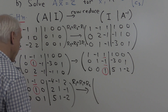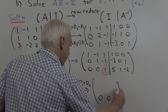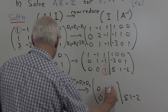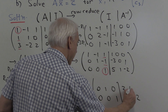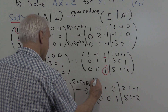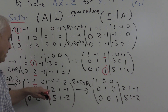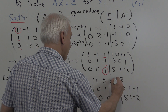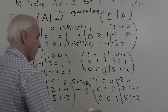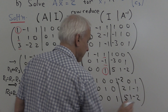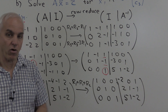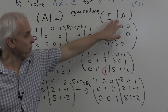Now we are going to perform our last step, which is to take this pivot element and use it to eliminate the 1 above it. We're going to add row 2 to row 1. So row 1 is going to be the old row 1 plus row 2. Starting from the bottom row: 0, 0, 1, 5, 1, minus 2. Then 0, 1, 0, 2, 1, minus 1. And adding row 2 to the top row gives 1, 0, 0. Then 2 plus minus 4 is minus 2. 1 plus minus 1 is 0. And minus 1 plus 2 is 1. So there it is in fully reduced row echelon form.